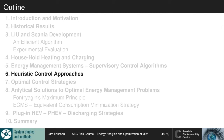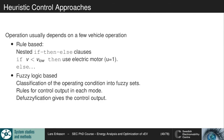Looking shortly at heuristic control approaches: in these approaches we have rules that depend on a few vehicle operation parameters — usually nested if-else clauses. For example: if velocity is low then use the electric motor, else use the combustion machine. You could also have fuzzy logic based controllers that rely upon the methodology of fuzzy logic, working with classification of operating conditions into fuzzy sets, making rules for the control output for each mode, and then using the defuzzification step to give the control output.